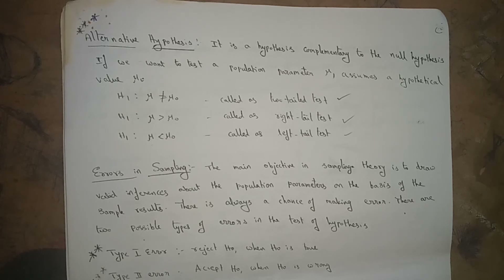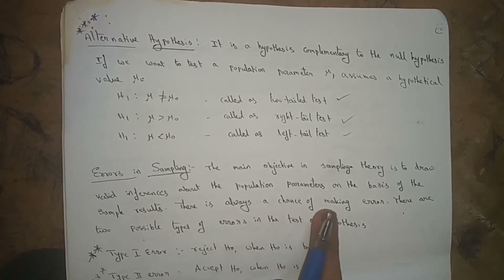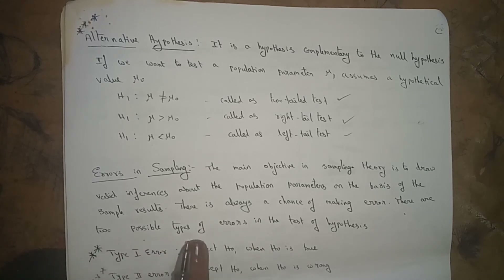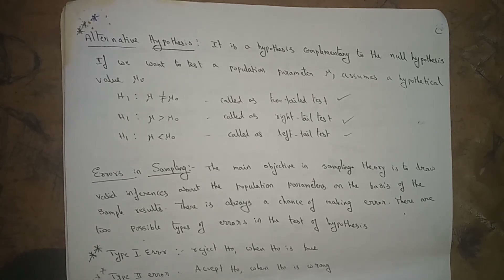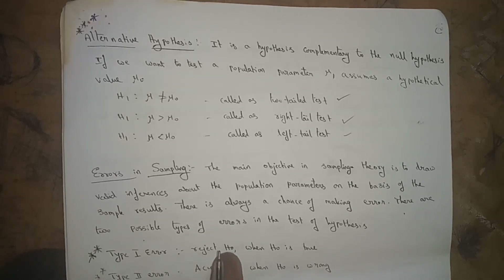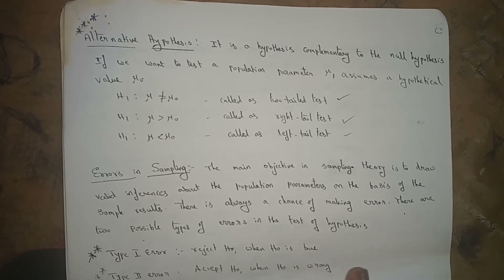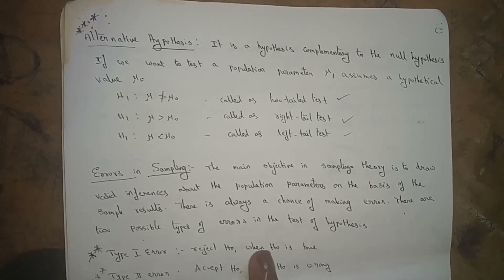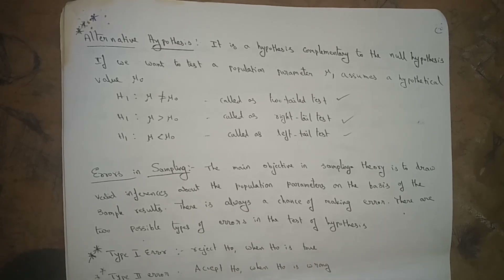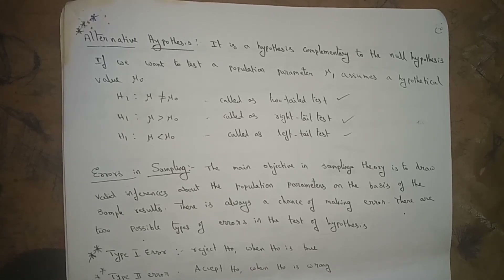Errors in sampling: the main objective in sampling theory is to draw valid inferences about population parameters on the basis of sample results. There is always a chance of making an error. There are two possible types of errors in the test of hypothesis. Type 1 error rejects H₀ when H₀ is true. Type 2 error accepts H₀ when H₀ is wrong.